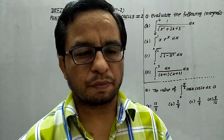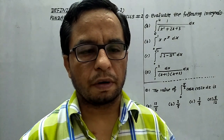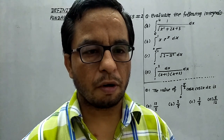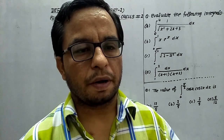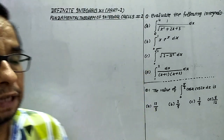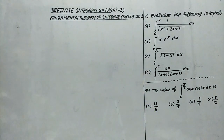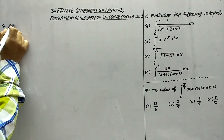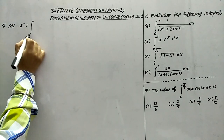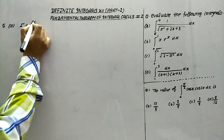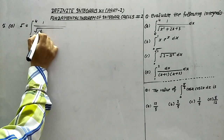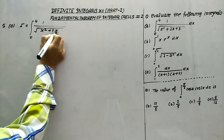Hello everyone. In this part 2 of definite integrals, we will solve the questions related to the fundamental theorem of integral calculus. Let's start with the solution of question number 1, part a. We have to find out the integration from 0 to 4 of 1 upon under root of x squared plus 2x plus 3.